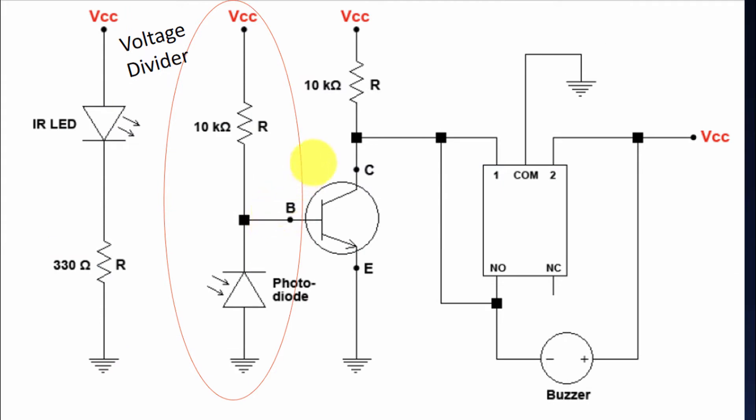This is our circuit diagram. This region is our transmitter circuit and this whole part is our receiver circuit. In the transmitter circuit, we are just using an IR LED to throw the IR radiation so it can be received by the photodiode.